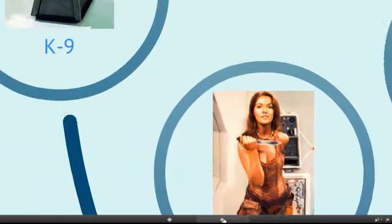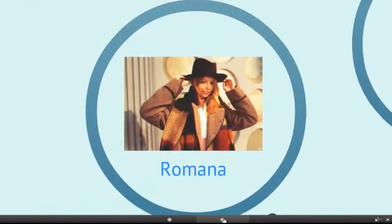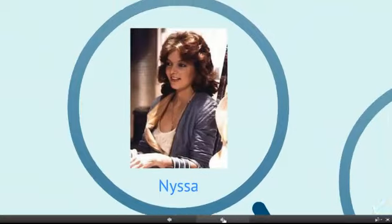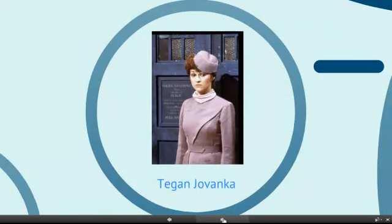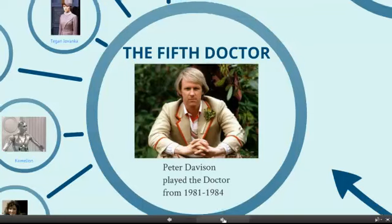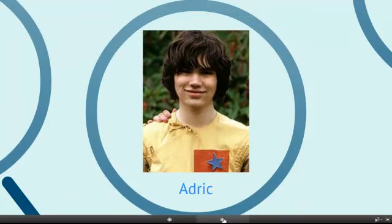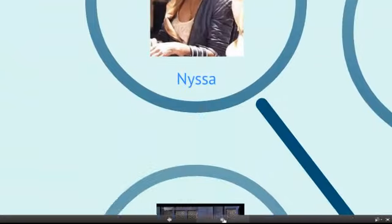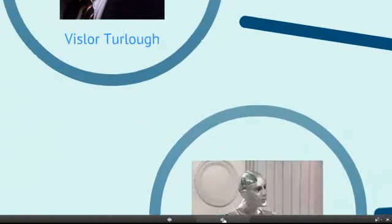We also see the first mechanical robot as a companion. Romana somehow escaped destruction in the Time War and comes back as well. Moving to the fifth Doctor, who is also a very quirky Doctor — you can see he has a stalk of celery in his lapel. He was a much younger Doctor than the others had been, and so he brought a different character and a different way of playing the Doctor. He was a very popular one as well, with companions including Adric, Nyssa, and Tegan, and a few others joining from time to time.